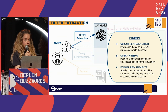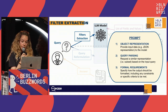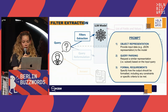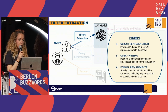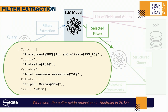The prompt asks the model to consider the user query and extract relevant information from the object representation, returning a subset of fields and values related to the query. We also specify format requirements: a JSON format, a maximum of three fields per query, and a maximum of five values per field. For example, given the query 'What were the sulfur oxide emissions in Australia in 2013,' the model returns: topic as 'environment, air and climate,' country field with value 'Australia,' and variable field with values including 'total main emissions,' 'pollutants,' and 'sulfur oxide.'